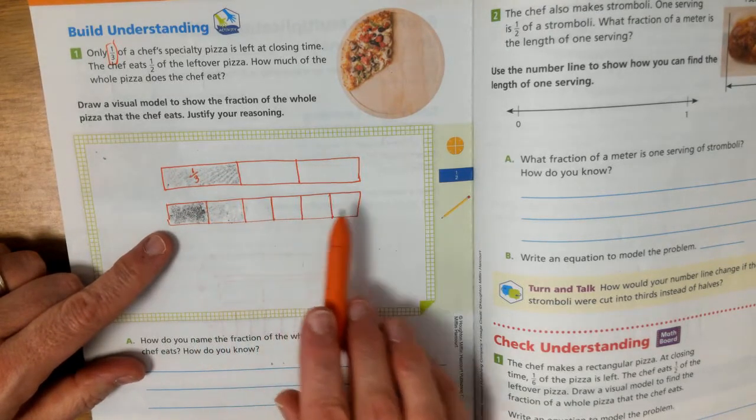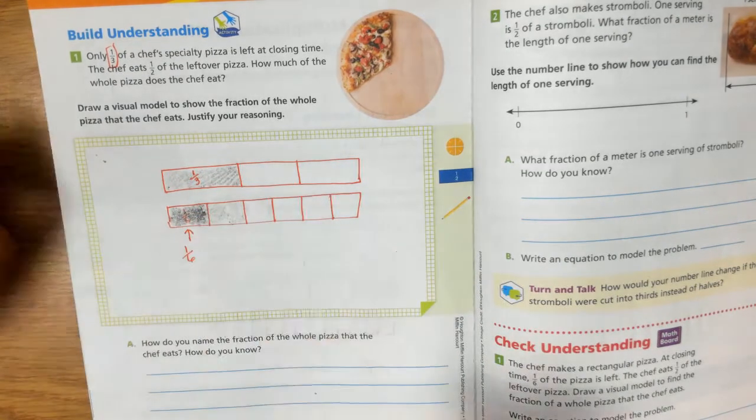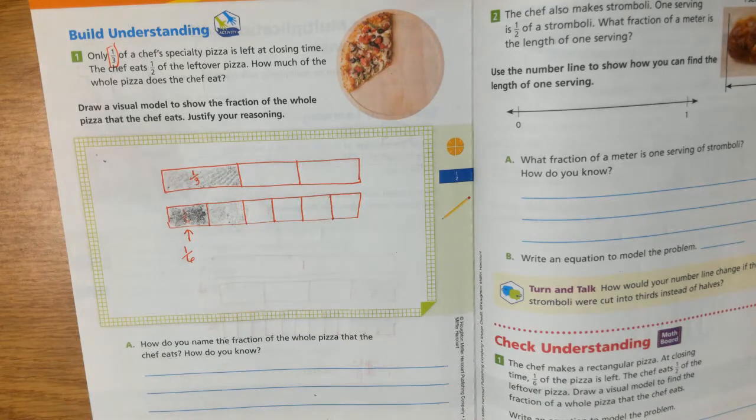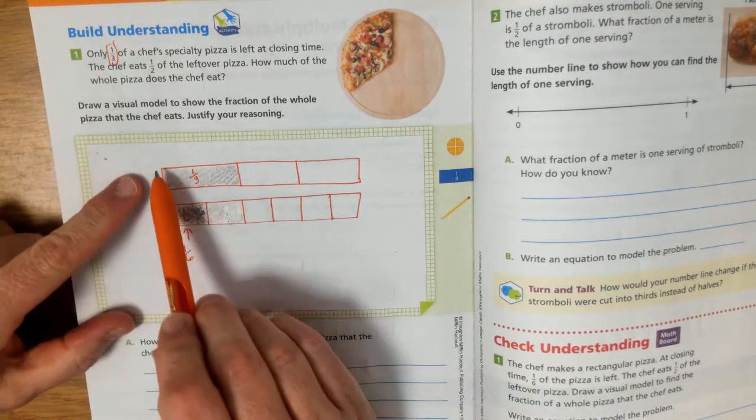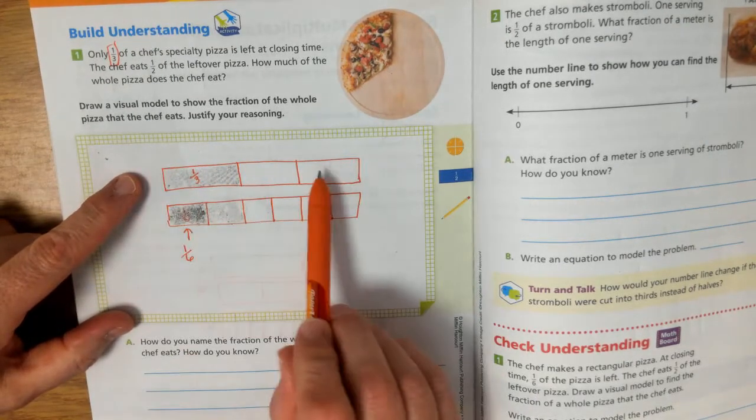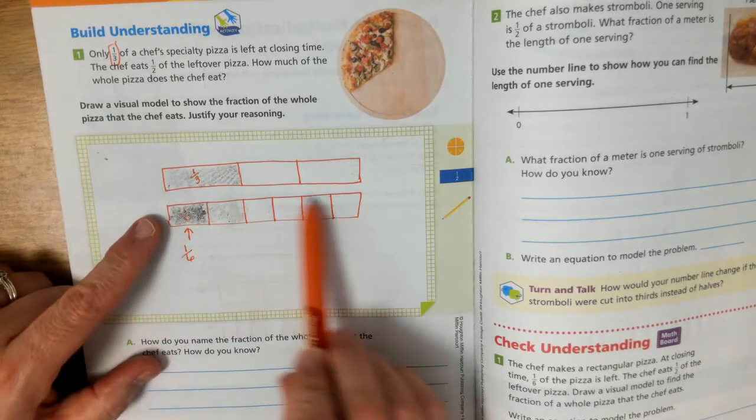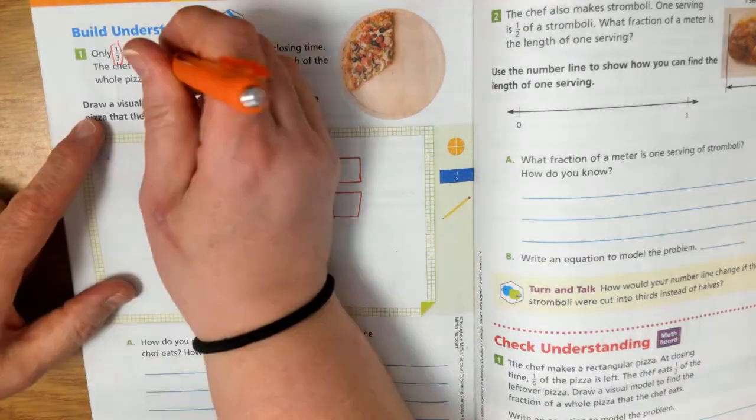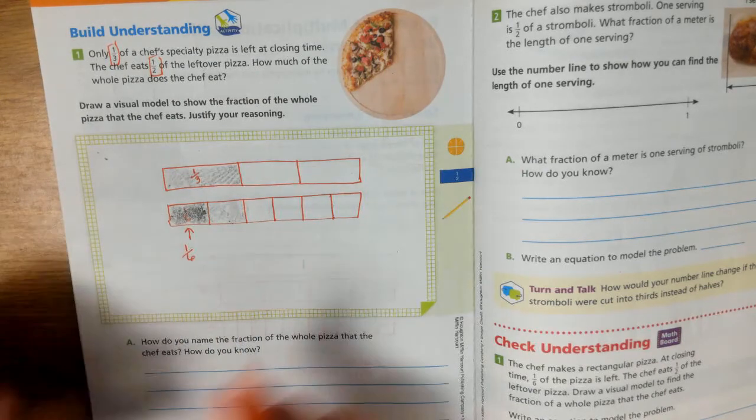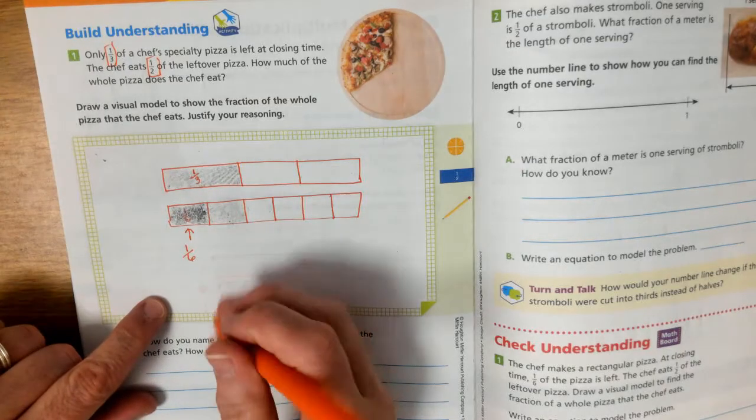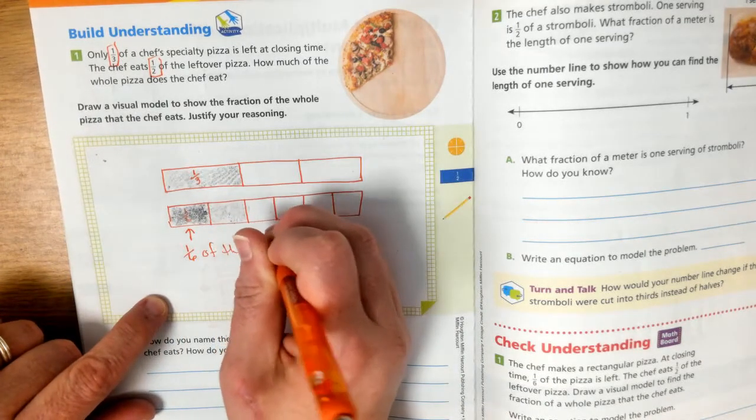So how much of the whole did the chef eat? So how many do we have left here? One, two, three, four, five, six. So the chef ate one-sixth of the whole pizza. Because the whole pizza was broken into thirds because a third of it was left. Then I'm going to take those thirds and break the thirds up in half. So when I break the thirds up in half, I have sixths left. So the chef eats one-sixth of the whole pizza.